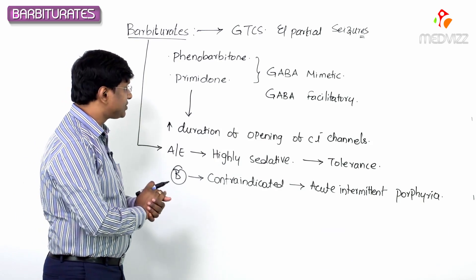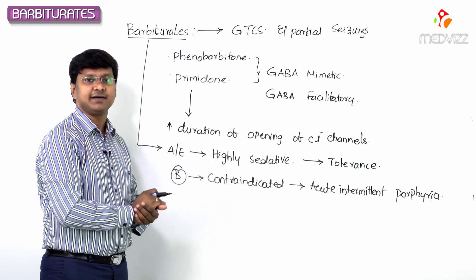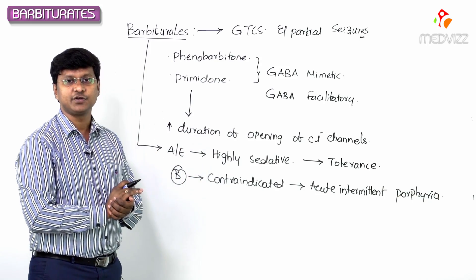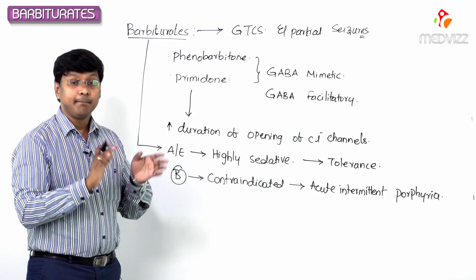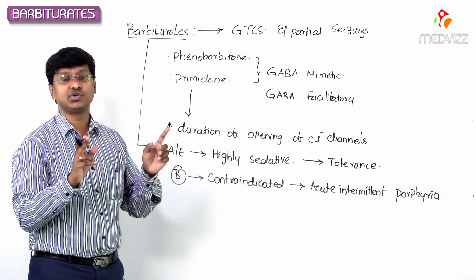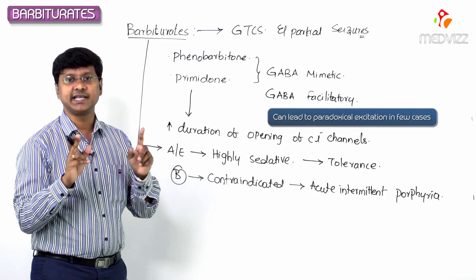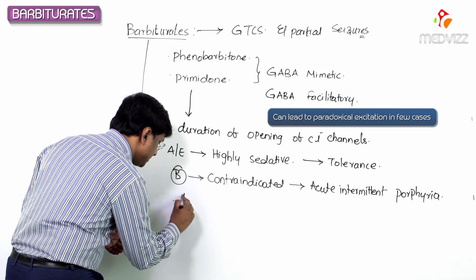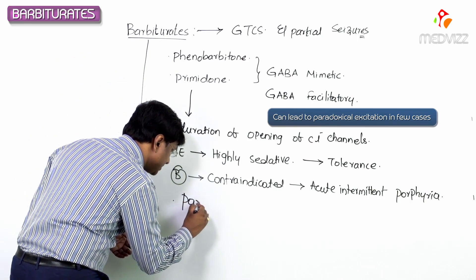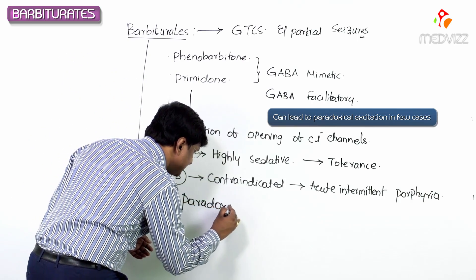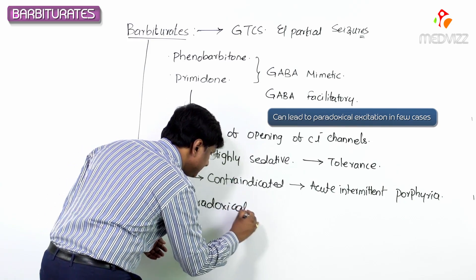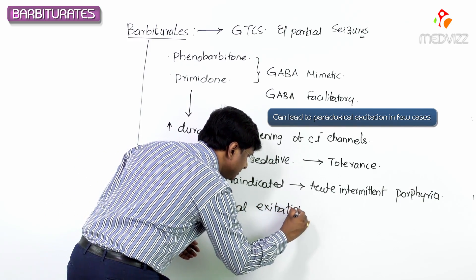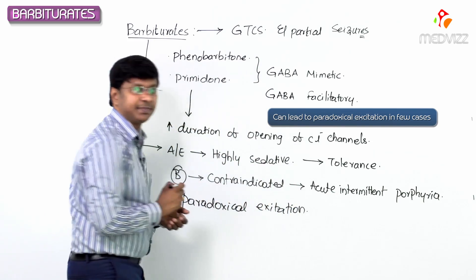These drugs normally suppress the abnormal neuronal activity and are useful for treatment of epilepsy. However, these drugs can cause paradoxical excitation in some patients.